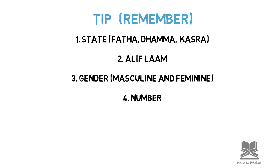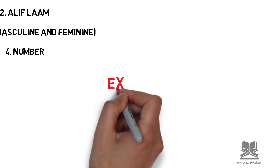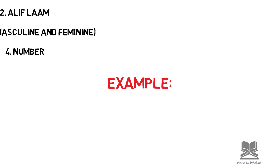Secondly, if the first word has an alif lam, the second word also needs to have an alif lam, meaning if the first word is a definite noun, the second one also needs to be definite. The third rule is that the genders must match: if the first word is masculine, the second word needs to be masculine as well; if the first word is feminine, the second one needs to be feminine. Lastly, the number needs to match — so if the first word is singular, dual, or plural, the second word follows accordingly.